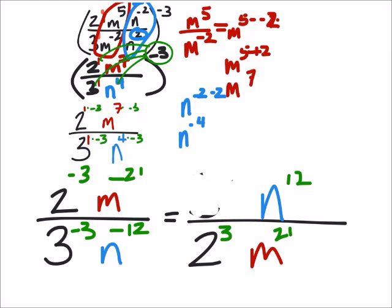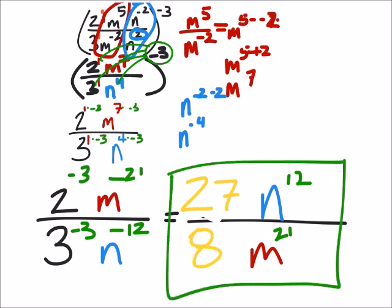And then we can find 3 to the power of 3, which is 27. Yeah, sure, 27. And 2 to the power of 3 is 8. And I don't think we can simplify that. So that should be our final answer there.